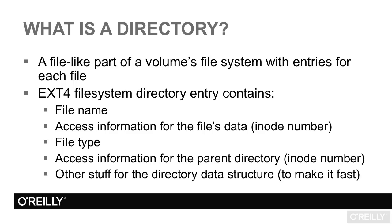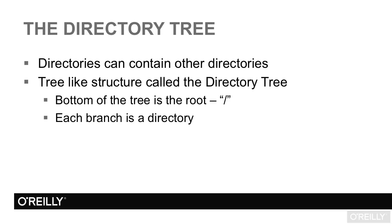A directory is a file-like part of the volume's file system that contains a list of other files and information about how to access them on that volume. In the Linux ext4 file system, each entry in the directory contains the file name, access information for the file's data, the inode number, the file's type, access information about the file's parent directory, and other stuff for the directory data structure to make it fast. You can have directories inside other directories until they form a tree-like structure. This is called the directory tree. The bottom of the tree is called root, or a slash with nothing in front of it, and each branch is a directory.